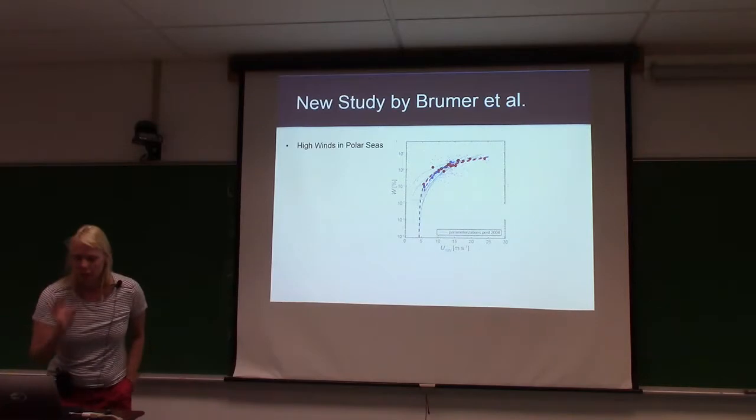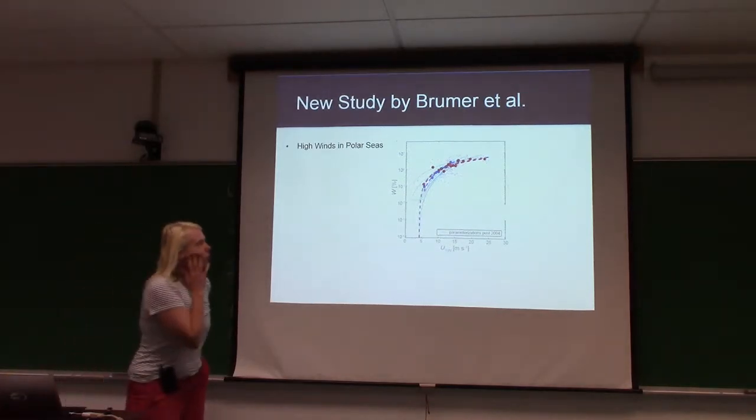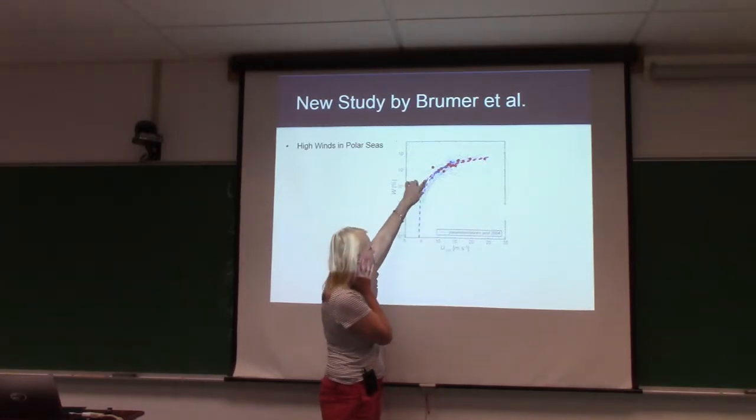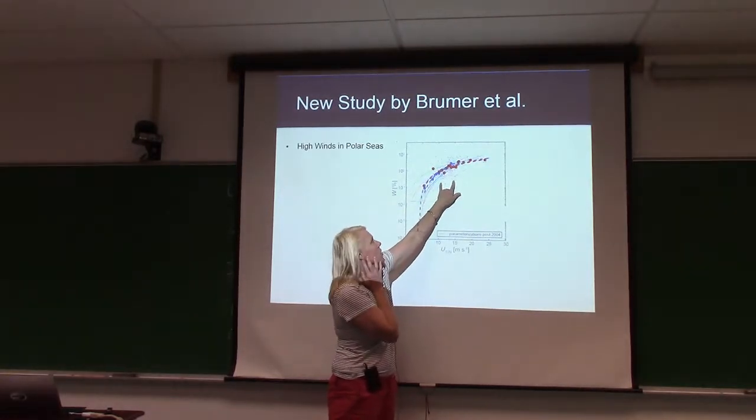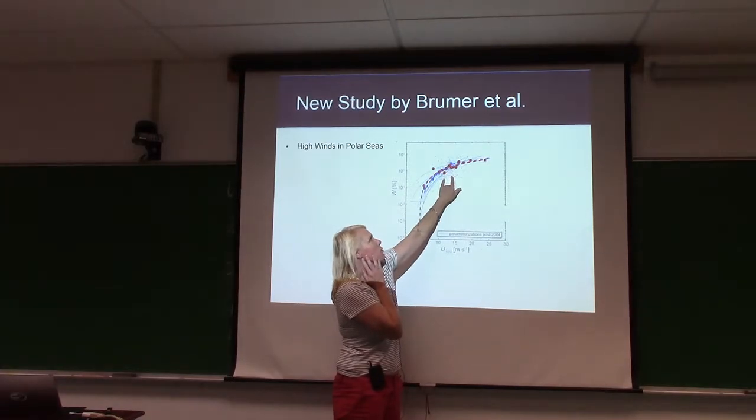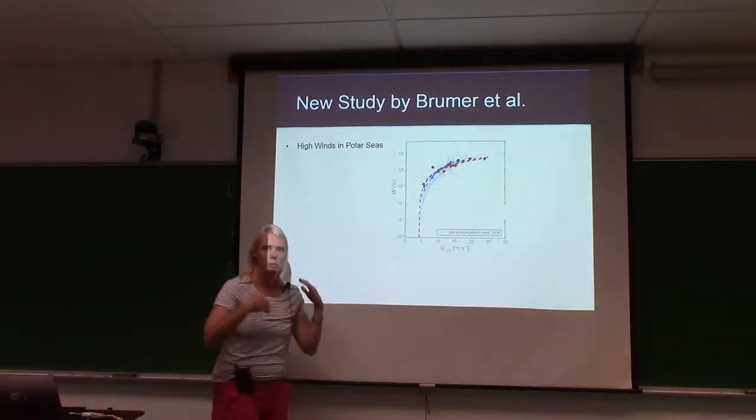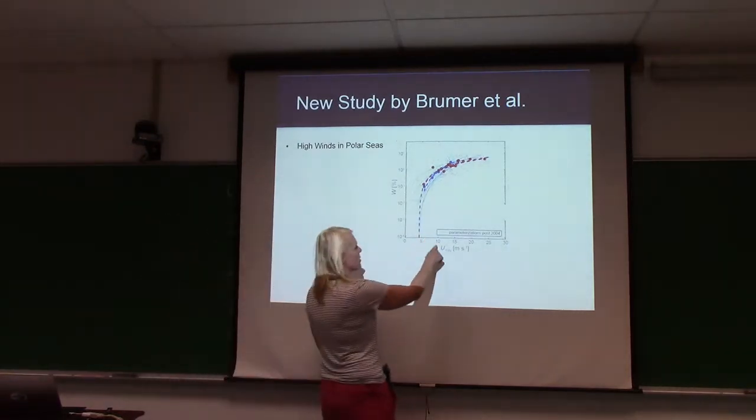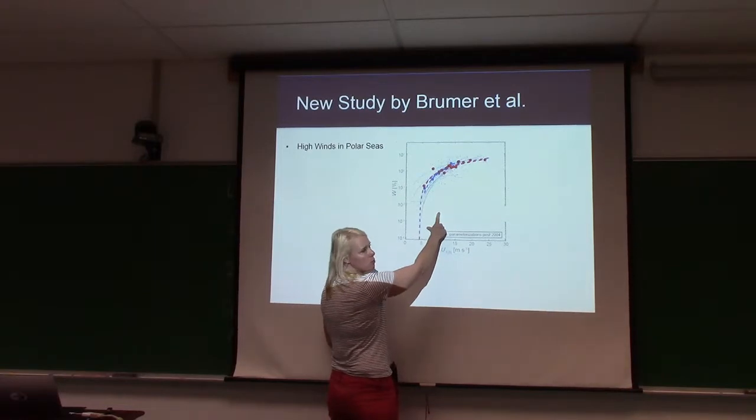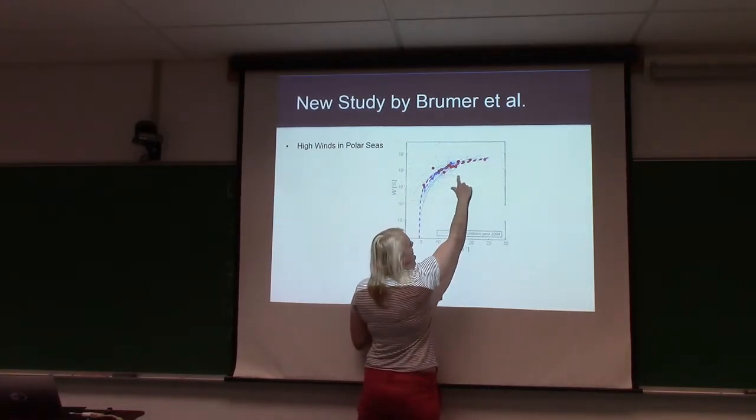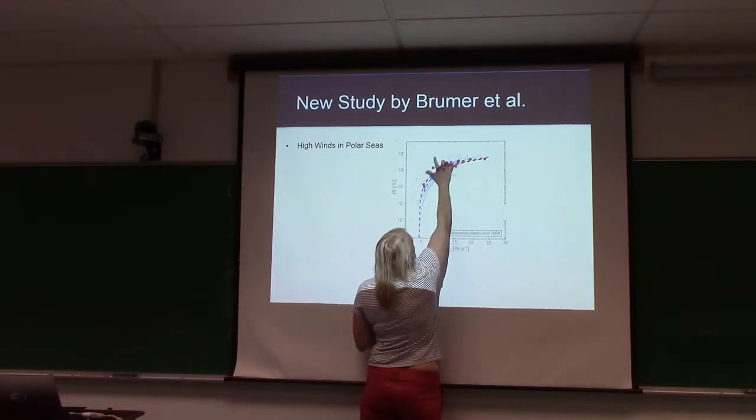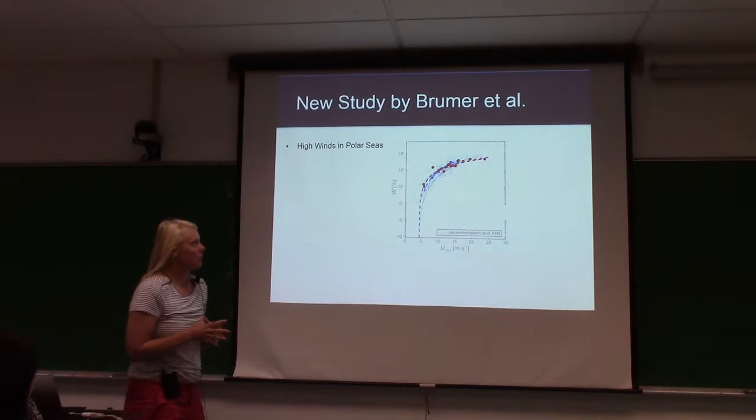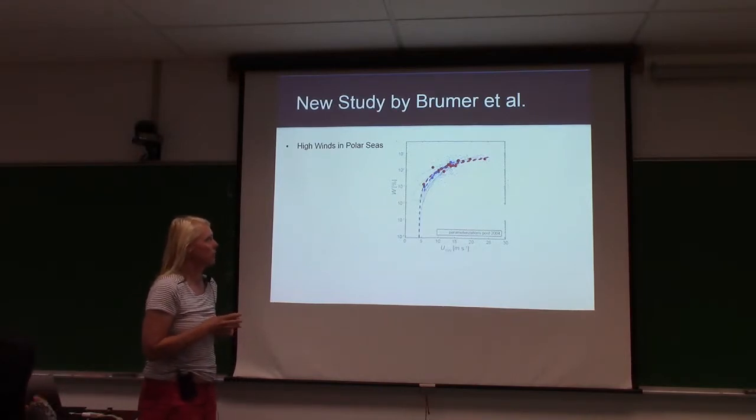Because our optics data would not, this cubic, this cubic relationship wouldn't actually work with the optics data we collect. So in a way we sort of said, we know they can't be that many white caps. In fact, there's very seldom 10%. It's like 8% is about as high as you can see. I'll show you that right here.